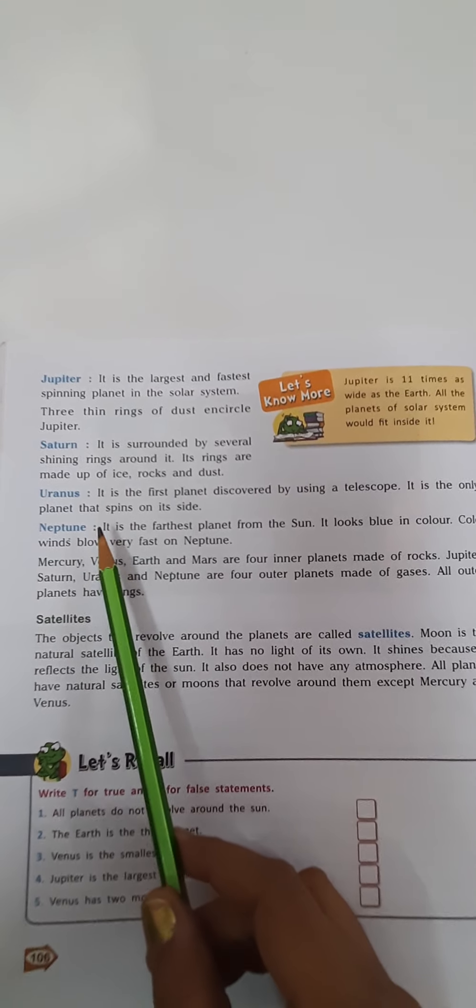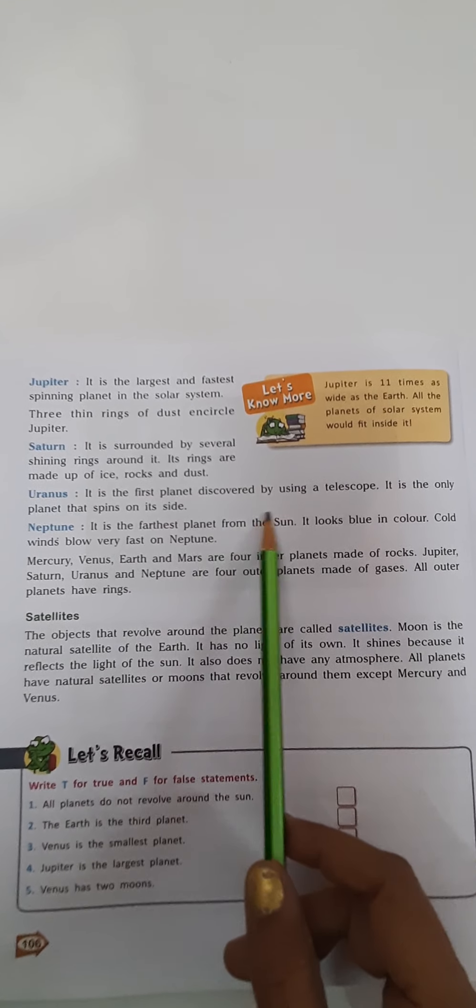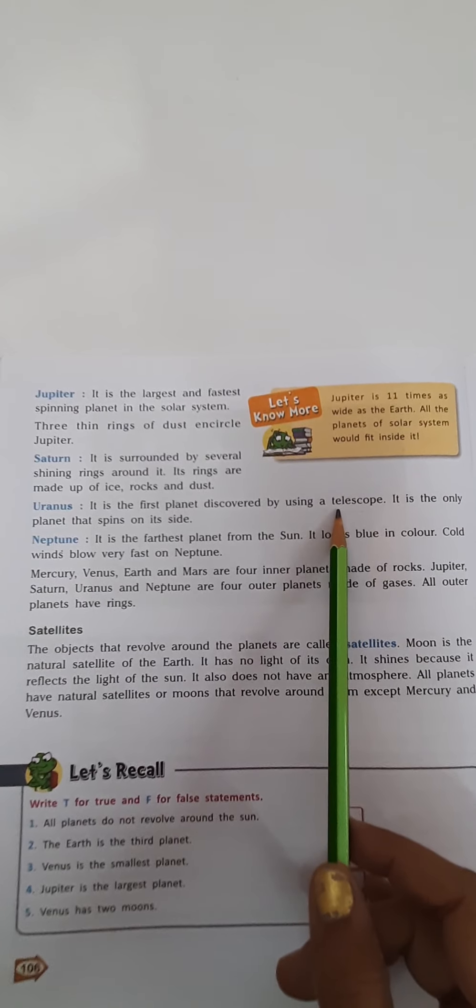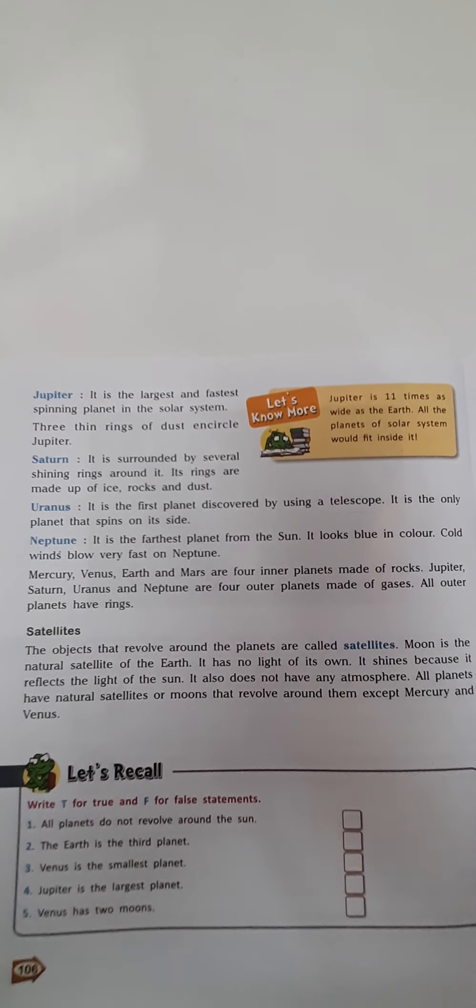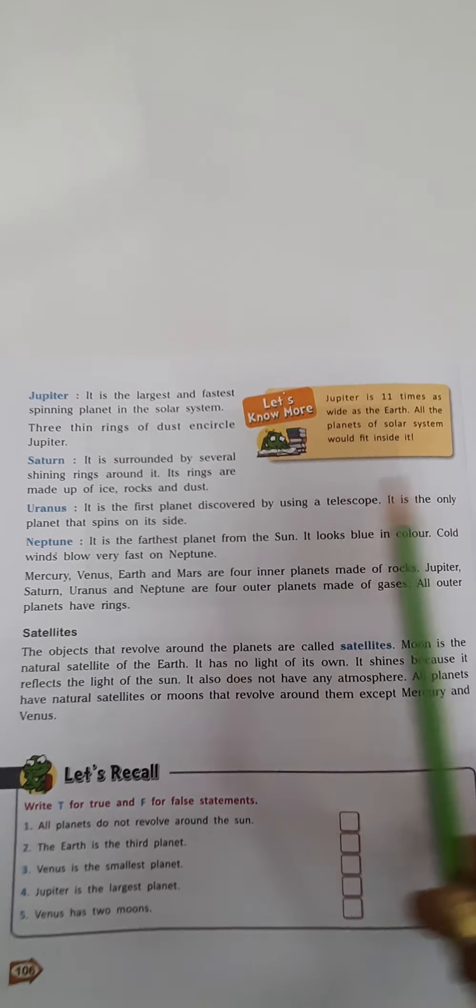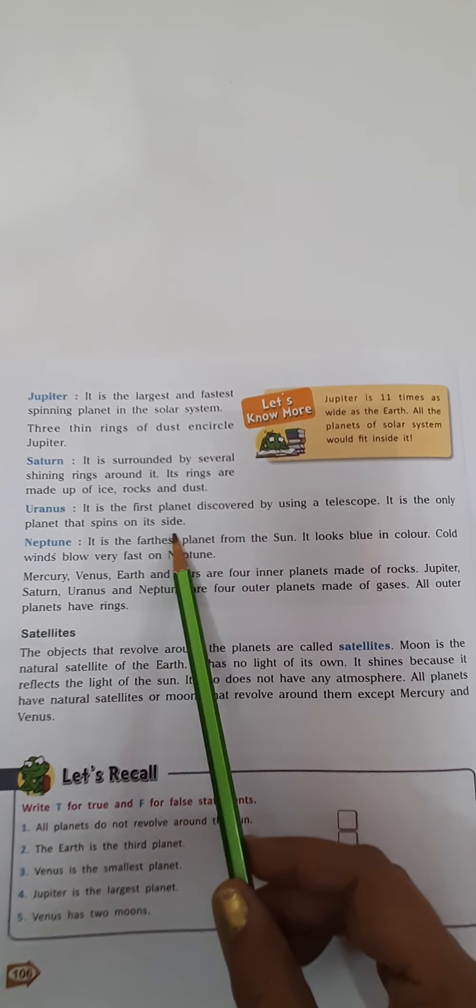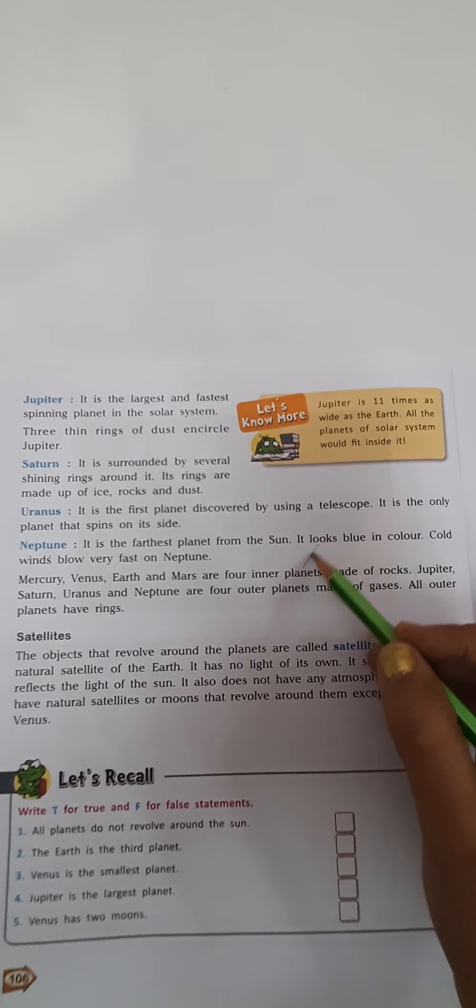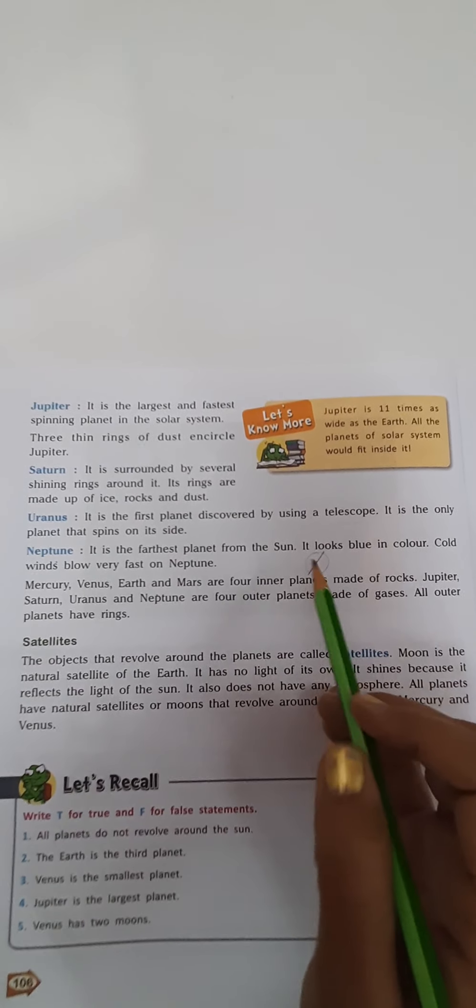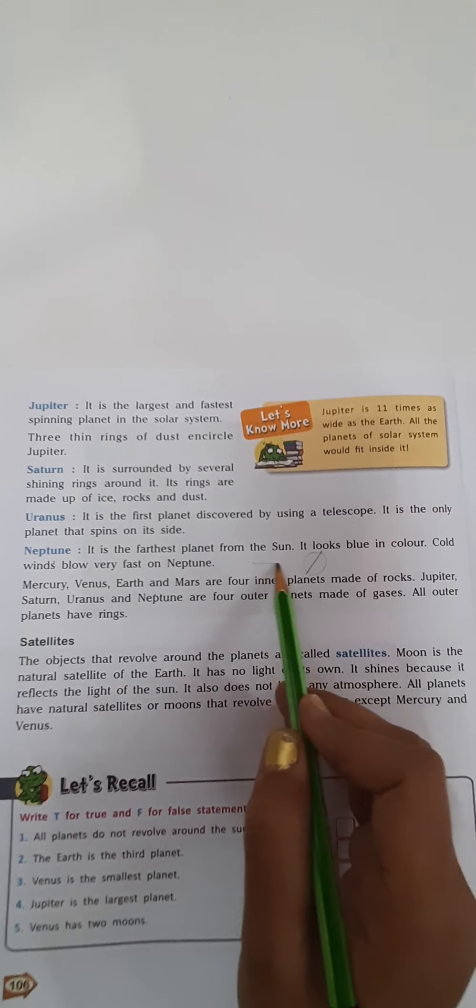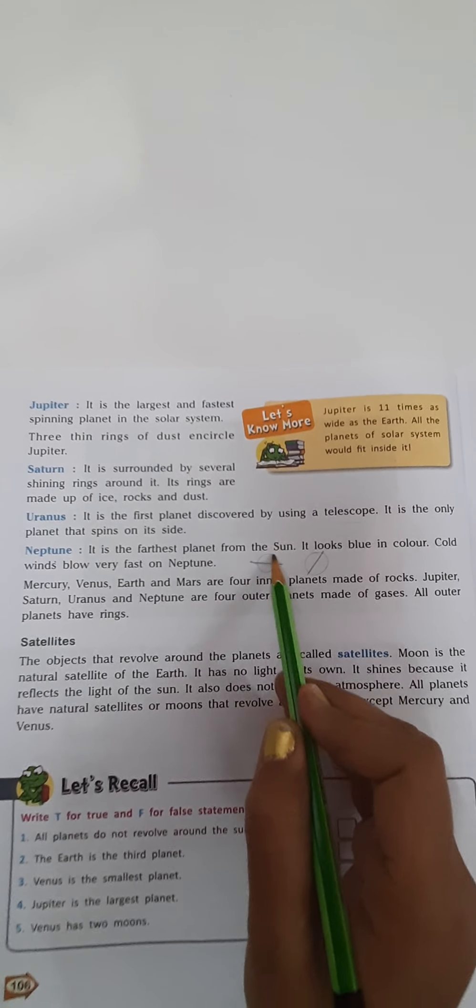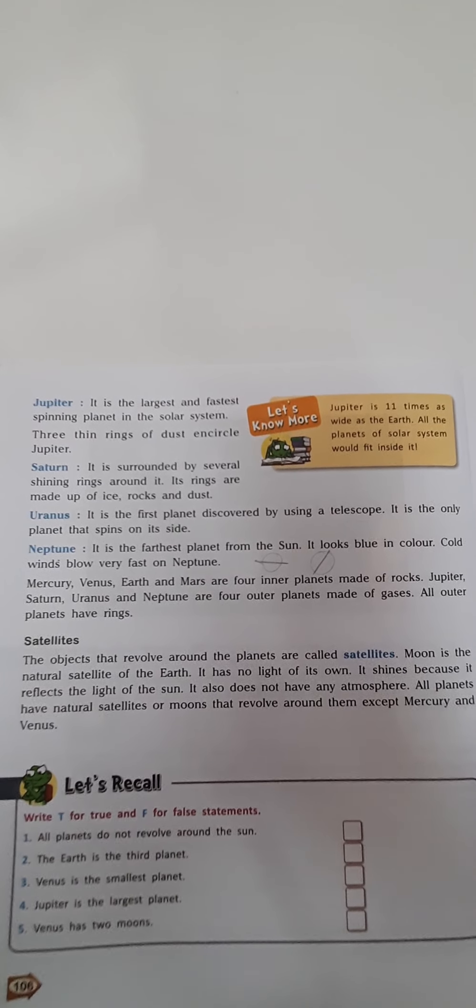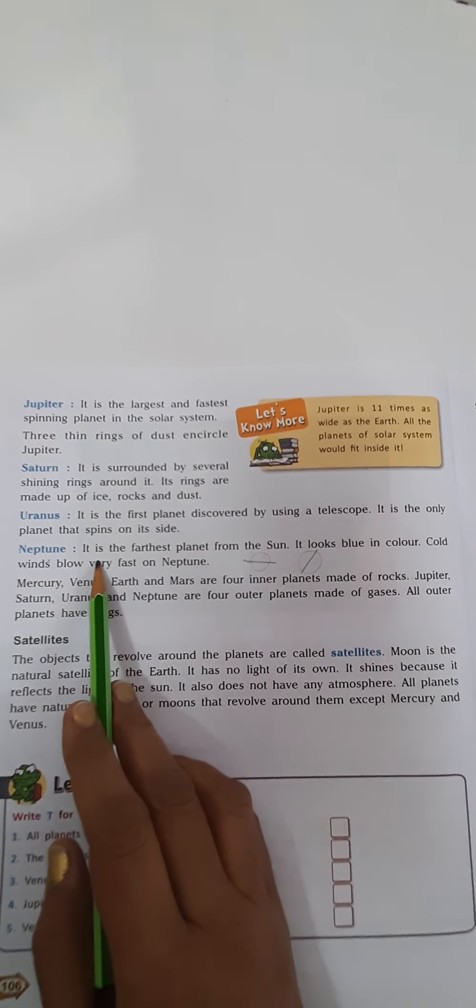Next is Uranus. It is the first planet discovered by using a telescope. Telescope is the instrument by which we can see all the celestial bodies. It is the only planet that spins on its side. That means all the planets are spinning like this, but Uranus's axis is like this only, and it spins like you are rolling a ball on the ground.